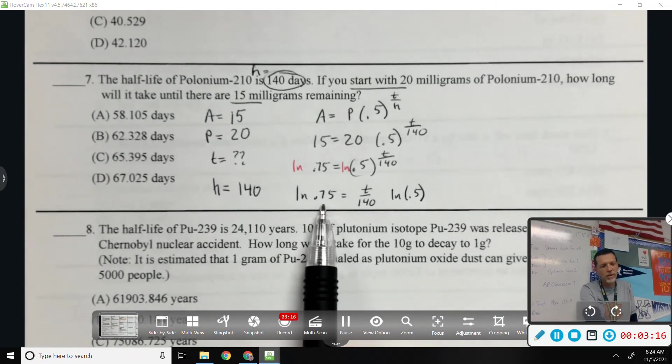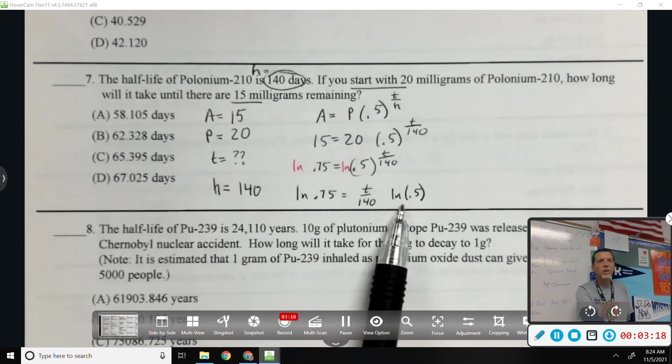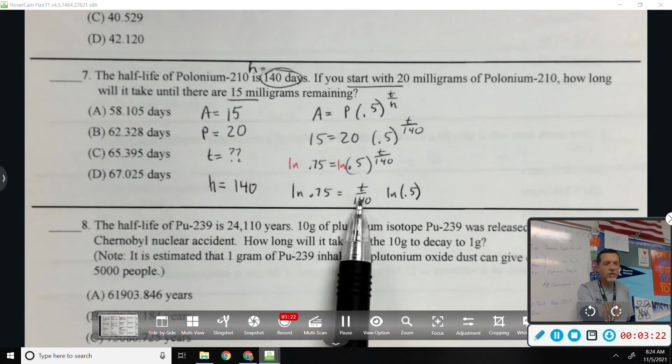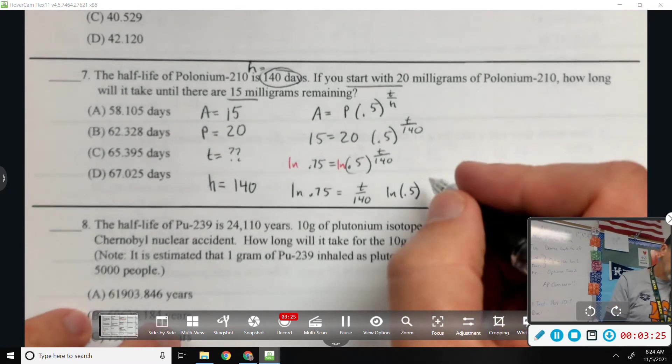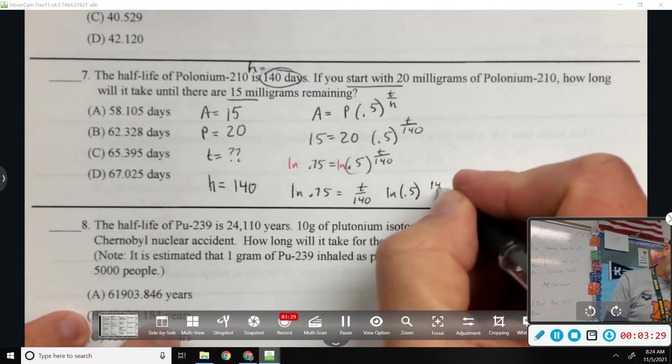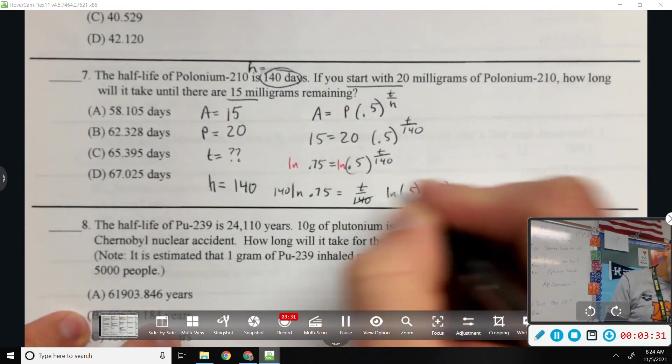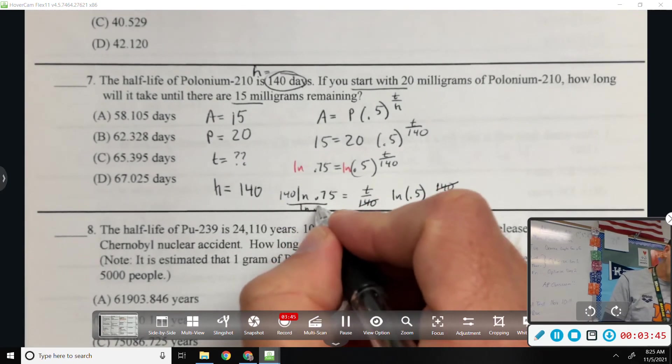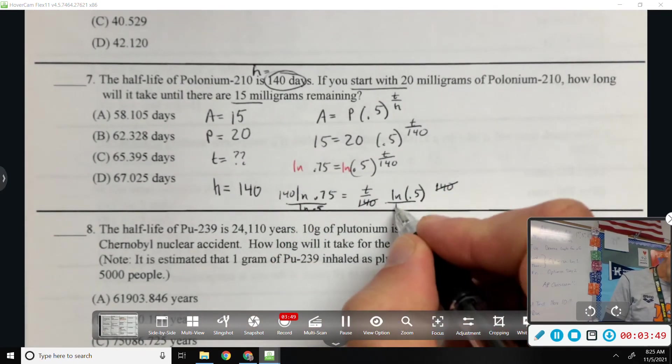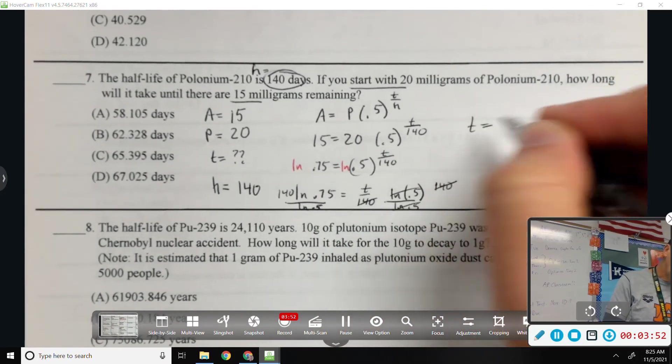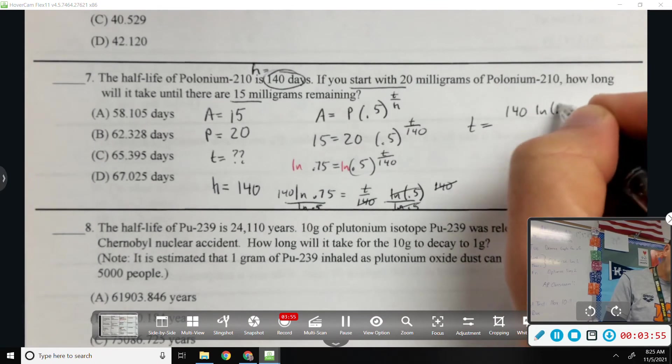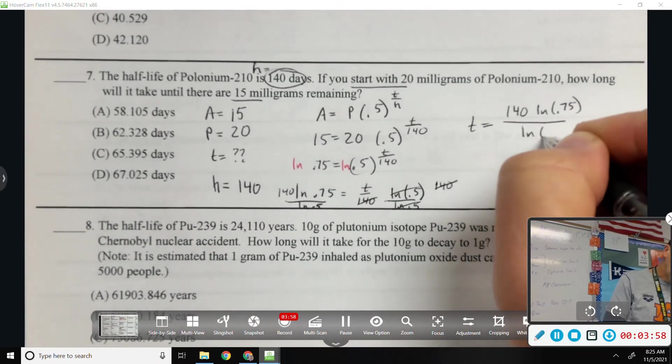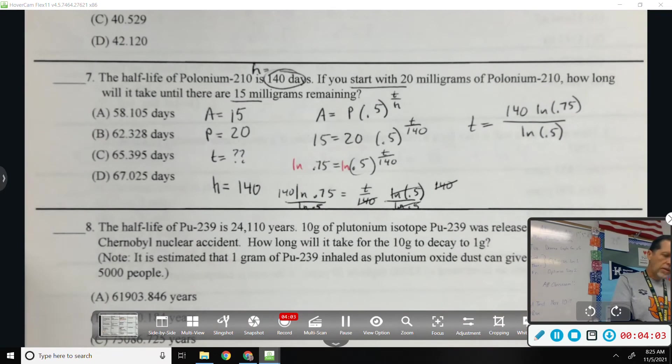Natural log of 0.75 is a weird number, but it's just a number. Natural log of 0.5, weird number, but just a number. So what do I do to get T by itself? All right, times 140. That'll cancel out the 140. What else could I do? Let's do it all at once here so I don't have to take up more space. Let's divide by natural log 0.5. So now we've got T by itself equals 140 natural log 0.75 divided by natural log of 0.5.